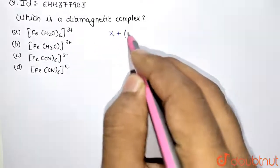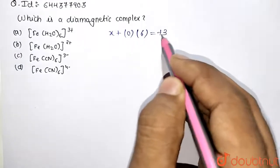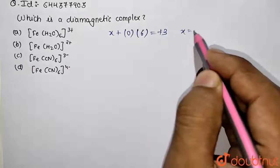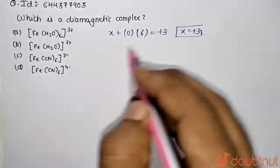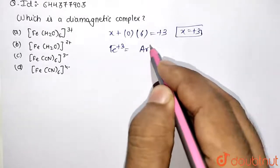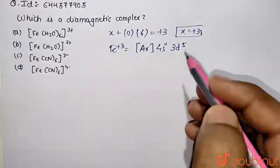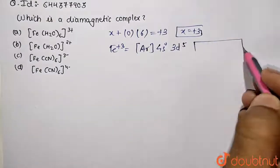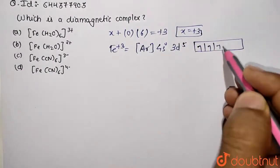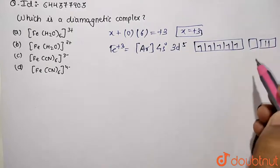So aqueous is a neutral ligand, so initially x, aqueous is zero and six molecules are there, and overall charge is positive three. So what value turns out to be positive three - that means iron is present in positive three state. So how can you represent it? It's going to be argon, 4s will be zero and we are left with 3d5 only because of ionization. So how it's going to show: one, two, three, four and five. 4s is vacant, 4p is already vacant.